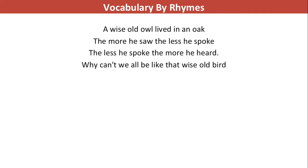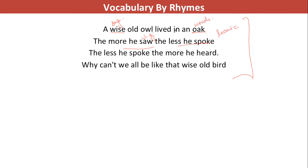Here's the full rhyme: 'A wise old owl lived in an oak' — wise maps to sagacious, oak woods is the forest. 'The more he saw, the less he spoke' — the more he saw means he was vigilant, and the less he spoke means he was laconic. 'The less he spoke, the more he heard. Why can't we all be like that bird?' So this entire nursery rhyme was coded in the given puzzle.